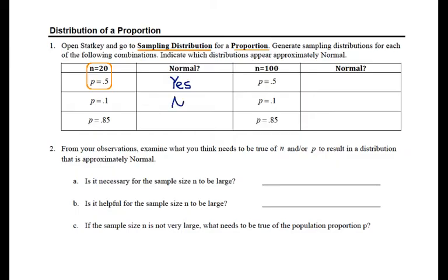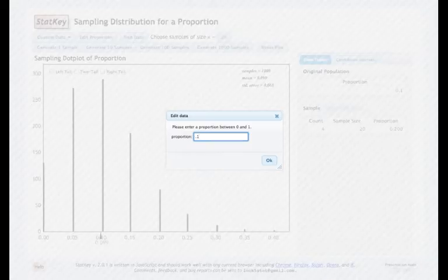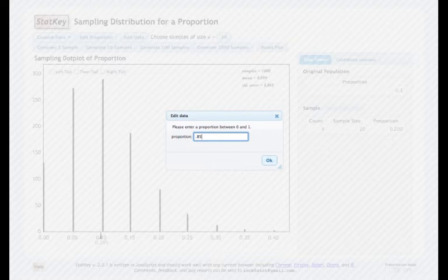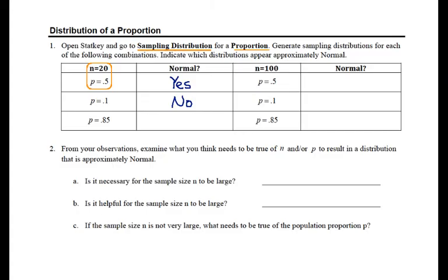We'd come back and say no. And then we try this again for 0.85. We have a similar problem, but this time on the right-hand side. So we'll also answer no.